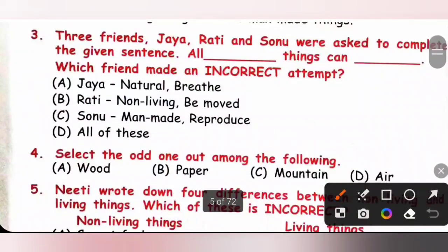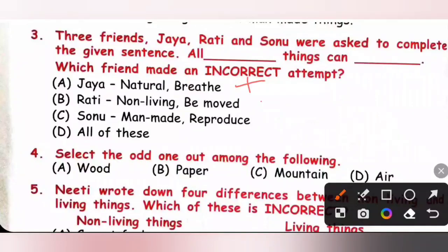Question 3: Three friends Jaya, Rathi and Sonu were asked to complete the sentence 'All ___ things can ___.' Which friend made an incorrect attempt? Jaya said: All natural things can breathe — incorrect, because natural non-living things like rock, soil, clouds, sun cannot breathe. Rathi said: All non-living things can be moved — also incorrect. Sonu said: All man-made things can reproduce — also incorrect, because man-made things are non-living and cannot reproduce. All of these are incorrect attempts, so option D is the correct answer.